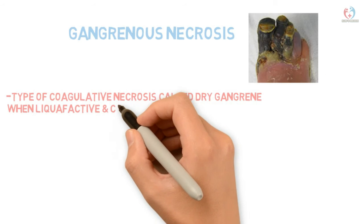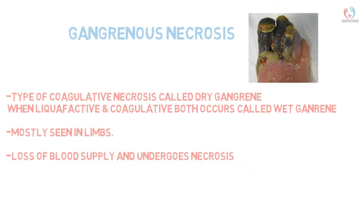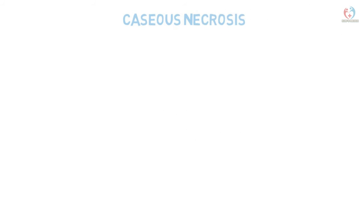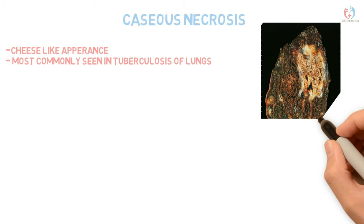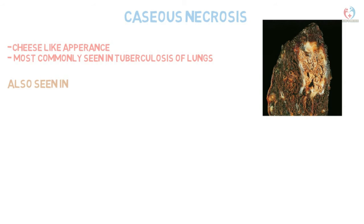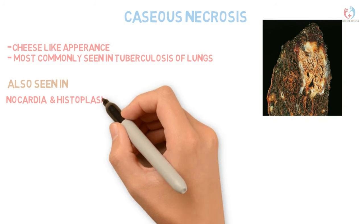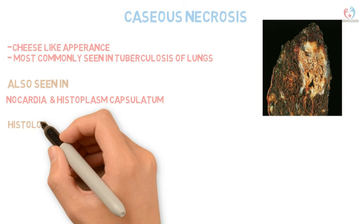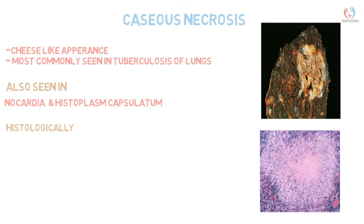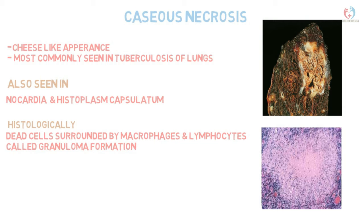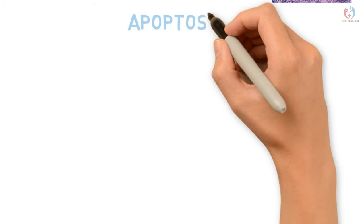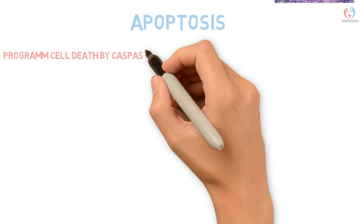Gangrenous necrosis is subdivided into dry gangrene — a subtype of coagulative necrosis — and wet gangrene, which is a combination of coagulative and liquefactive necrosis. It is mostly seen in limbs due to occlusion of blood vessels. Caseous necrosis means a cheesy-like appearance, mostly seen in tuberculosis of the lung, also in Nocardia and Histoplasma capsulatum infections. Granuloma formation occurs, where the injured cell is surrounded by macrophages, which are in turn surrounded by lymphocytes.